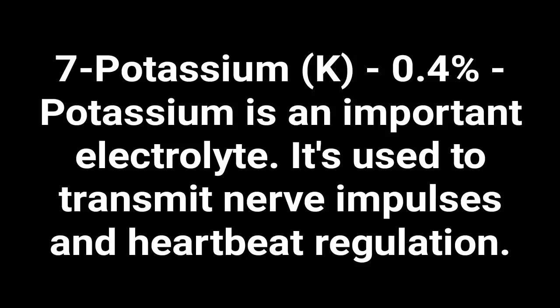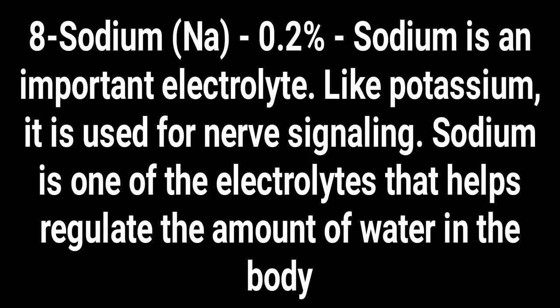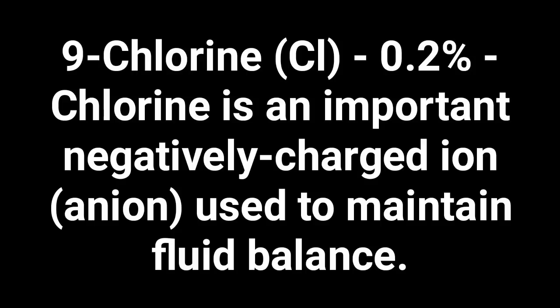Number seven: potassium — 0.4 percent of the human body. Potassium is an important electrolyte used to transmit nerve impulses. Number eight: sodium is also an important electrolyte, like potassium, used for nerve signaling. Sodium helps regulate the amount of water in the body.